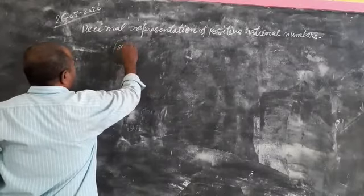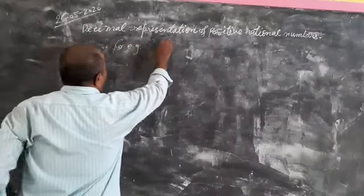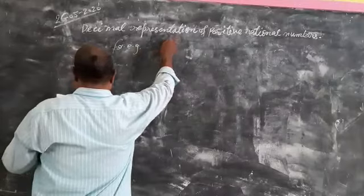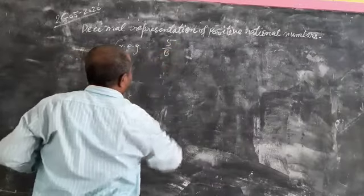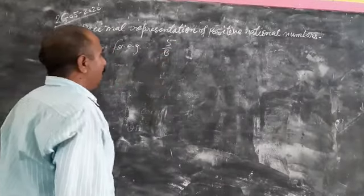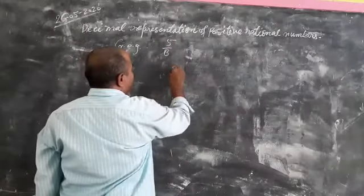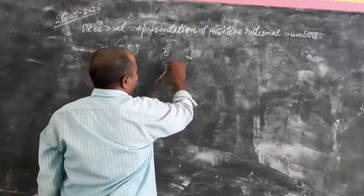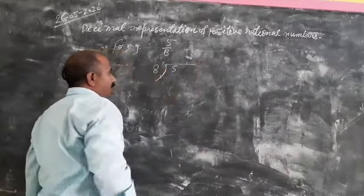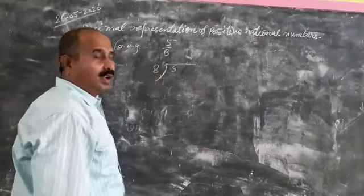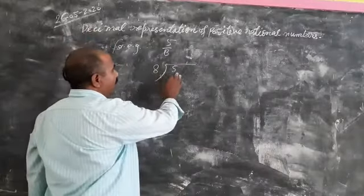For example, suppose that the question is 5 by 8. Here, you will divide 5 by 8. For this, you will use the long method of division, and you will divide 5 by 8.